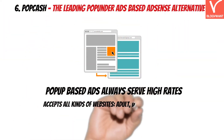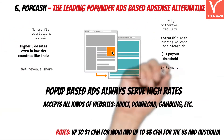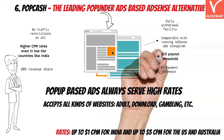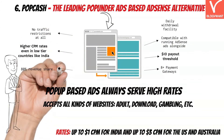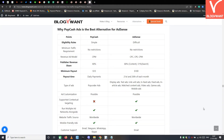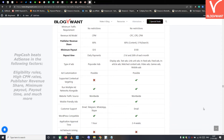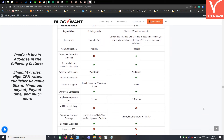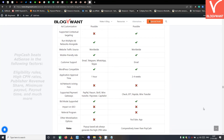Next is PopCash, the leading popunder ads-based AdSense alternative. While you must be aware of pop ads, popunder ads are different — they are displayed as a landing page that covers the entire screen and opens in a separate browser tab. 95% of people tend to ignore these ads because they provide an irritating user experience. But with PopCash that won't happen, because PopCash works differently and only shows one popunder ad to each visitor in 24 hours. PopCash beats AdSense in eligibility rules, high CPM rates, publisher revenue share, minimum payout, payout time, and much more.